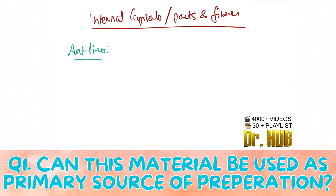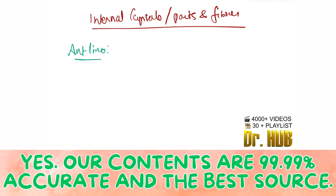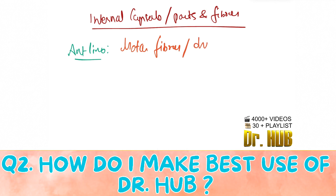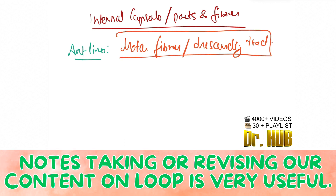Starting with the anterior limb: looking at the motor fibers and the descending tracts, there is the frontopontine.